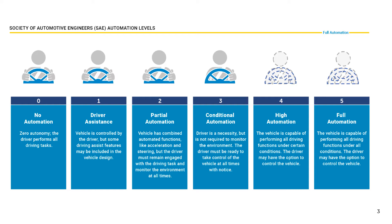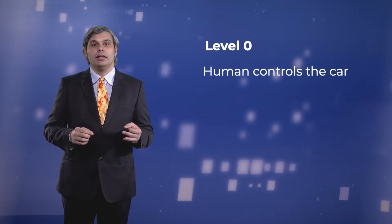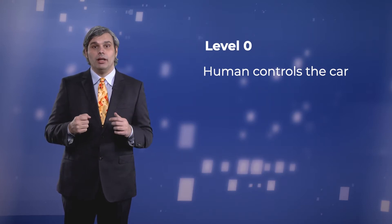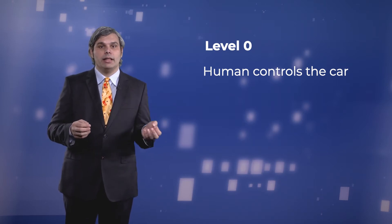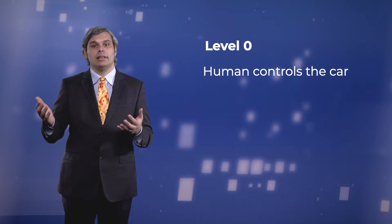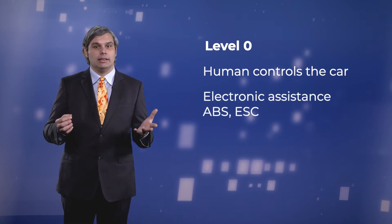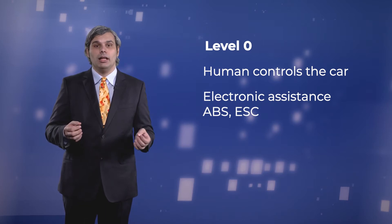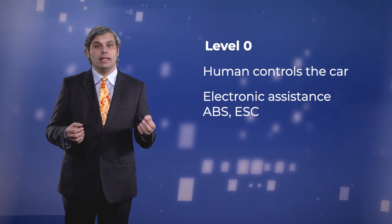Let's go back to Earth and see what exists today. In level 0 cars, the human fully controls the car, in the sense of steering and acceleration, at all normal times. There can still be some electronic mediation between the user's commands and the car's operators in case of emergency. Since the 90s, there have been electronic systems such as ABS, Anti-Lock Braking System, and ESC, Electronic Stability Control, as well as many other variations on those ideas.